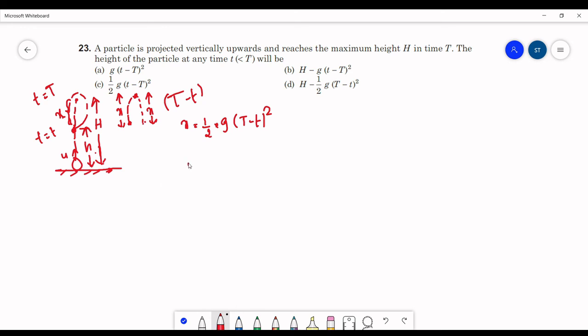We want small h. Small h can be written as capital H minus x, so this will be h minus half g into (T minus t) whole squared. So option d will be correct.